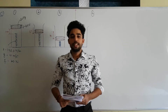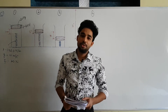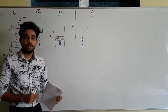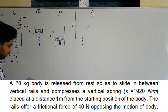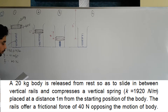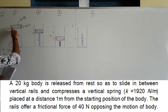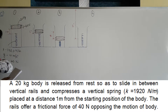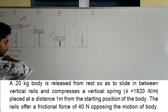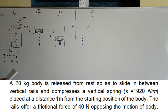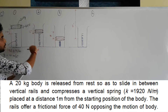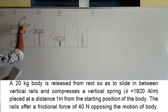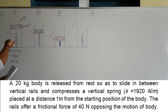Hello everyone, welcome to another video of Detangle. In this video, let's do a question related to work, energy, and power. A 20 kg body is released from rest and slides between rails, compressing a vertical spring as it falls down.